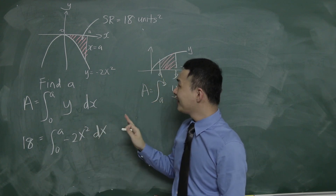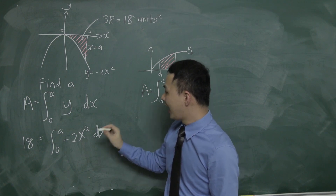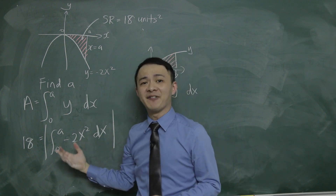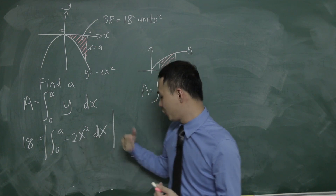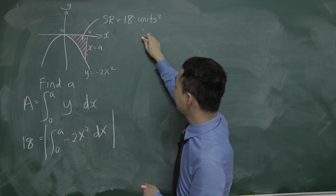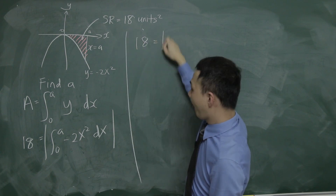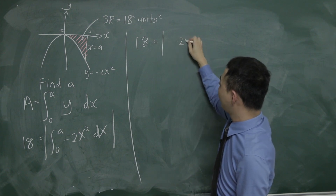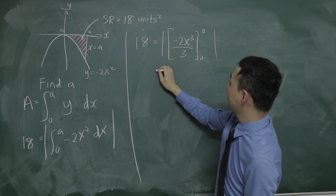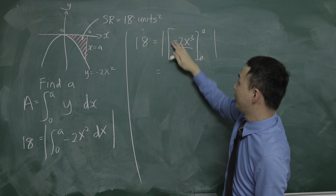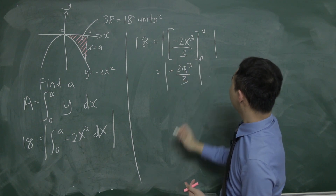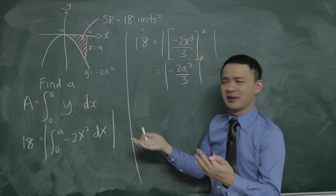I'll add the modulus because this area is below the x-axis and I don't want a negative answer. Integrating negative 2x squared gives negative 2x cubed over 3, evaluated from 0 to a. Substituting: I get negative 2a cubed over 3 minus 0, so the modulus of negative 2a cubed over 3 equals 18.